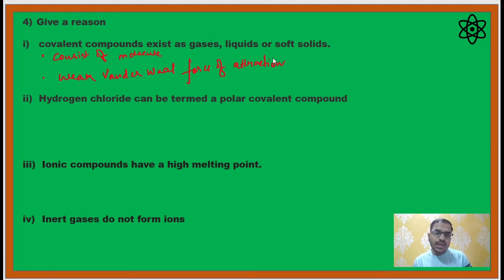Next one. Hydrogen chloride is termed as polar covalent compound. Why polar covalent? First of all, you need to know the electronic configuration of hydrogen, that is one, and chlorine has seven electrons. They will share the electron between themselves to form single covalent bond.